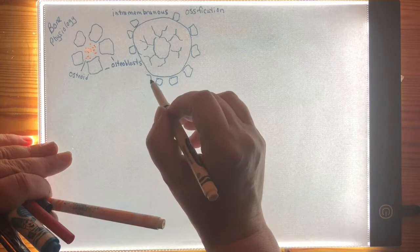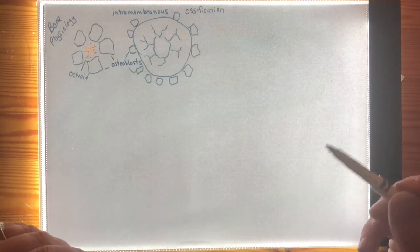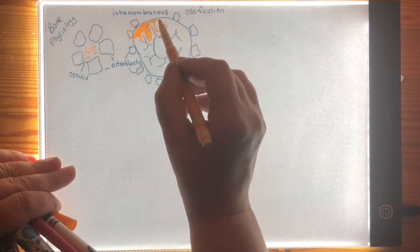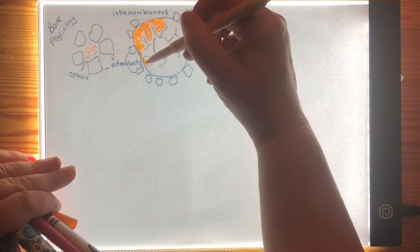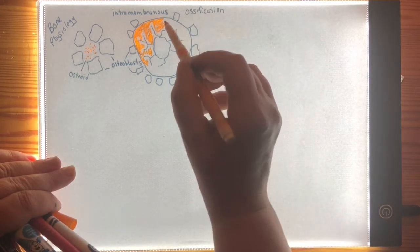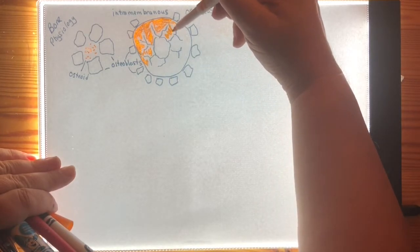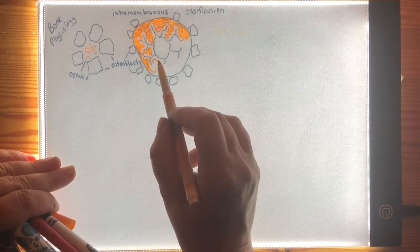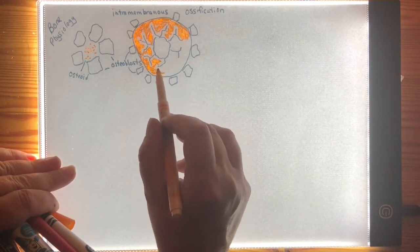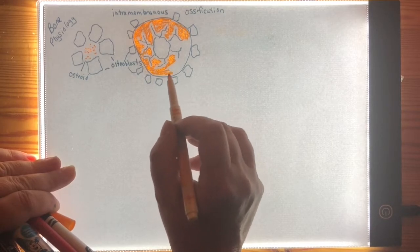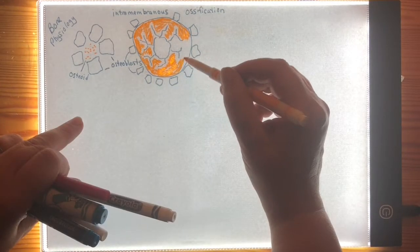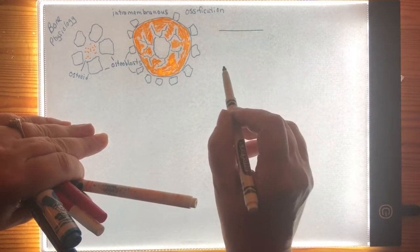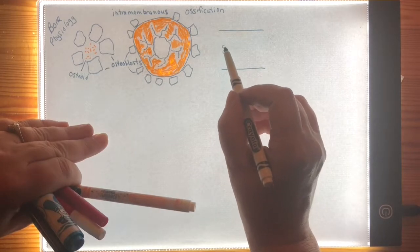Around the outside, we still see osteoblasts secreting osteoid, secreting bone material. One osteocyte has buried itself inside while the osteoblasts around it continue to secrete osteoids. Recall that the job of an osteocyte is to maintain the bone material surrounding it. We're going to be coloring the bone material orange. Intramembranous ossification results in flat bone material pretty much exclusively.